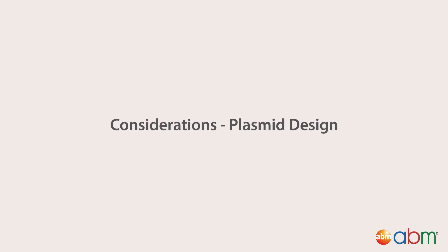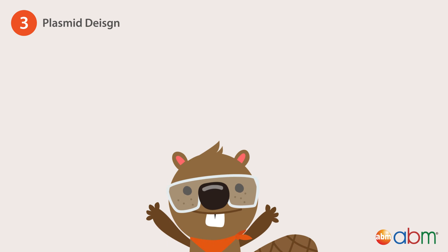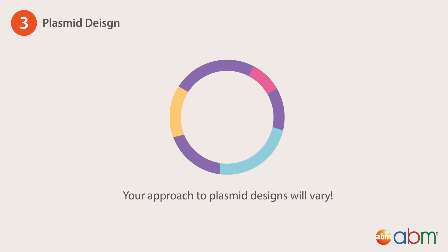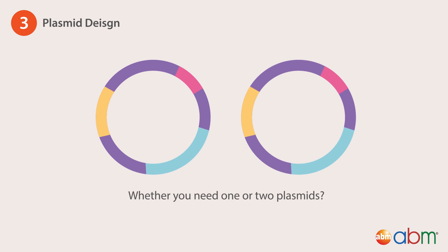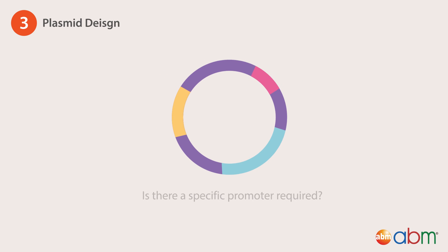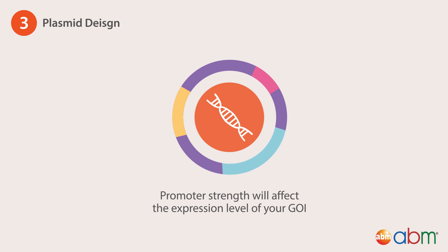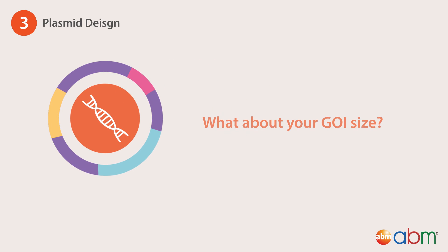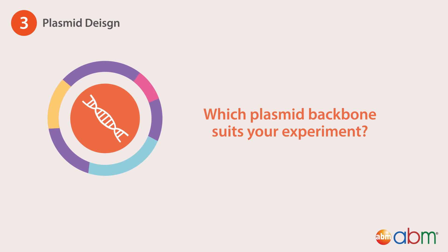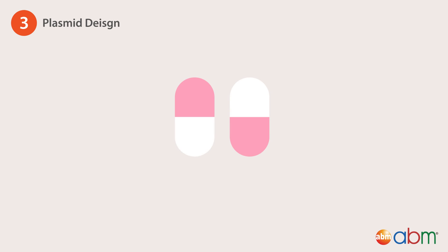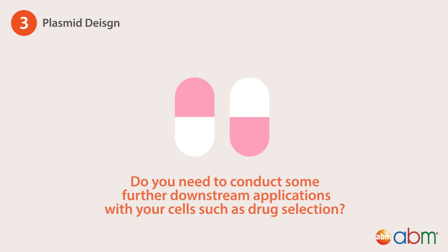Considerations — plasmid design. Depending on your intended outcome, your approach to plasmid design will vary. Consider whether you need one or two plasmids to get the job done. Is there a specific promoter required? Promoter strength will affect the expression level of your gene of interest. What about your gene of interest size? Which plasmid backbone suits your experiment? Consider antibiotic resistance — do you need to conduct further downstream applications with your cells, such as drug selection?